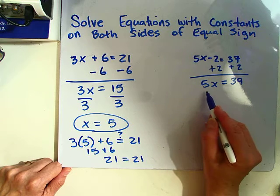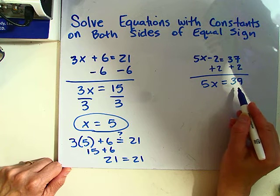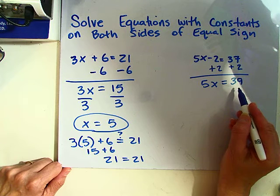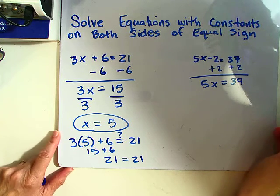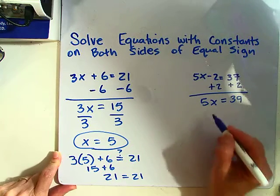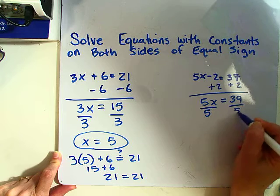Now we're going to divide. Notice that 5 does not go into 39 neatly, so we're going to have a leftover. You can write that leftover as a fraction or as a decimal. So 5x divided by 5, 39 divided by 5.